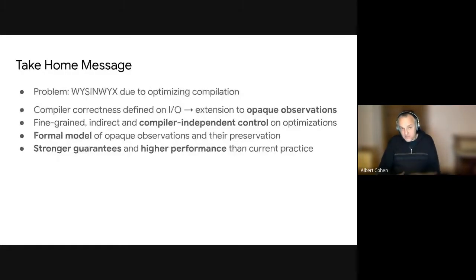And so just to summarize, we have been addressing this WYSINWYX effect. So we want to have the correctness of transformation with respect to security properties defined independently of any program transformation of any particular compiler implementation. And this is where opaque observations help. So we define these opaque observations as both observations and opaque expressions. We have a formal model for these, and this model provides stronger guarantees and higher performance than the state of the art.